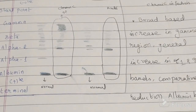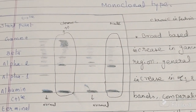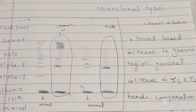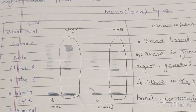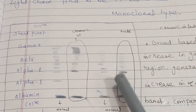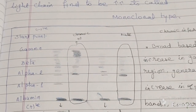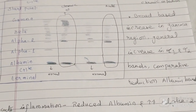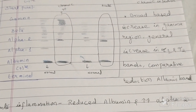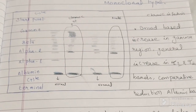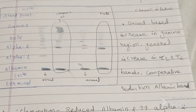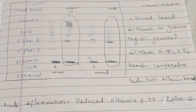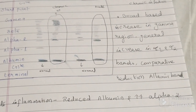Now, what about acute infection? In acute inflammation, the pattern is similar but in compensation there is some loss in albumin. Particularly, the alpha 2 region shows prominence, possibly due to IgM. Reduced albumin and increased alpha 2 indicates acute inflammation. In chronic infection, there is a broad-based increase in the gamma region, with a generally increased alpha 1 and alpha 2 band and a comparative reduction in albumin.